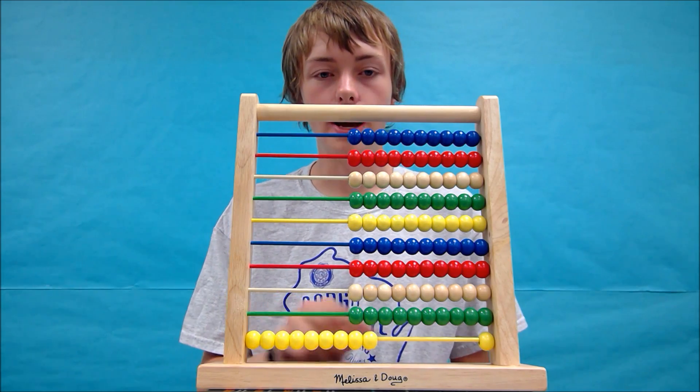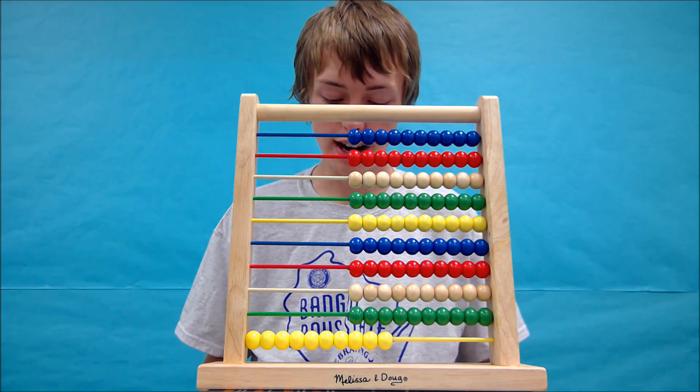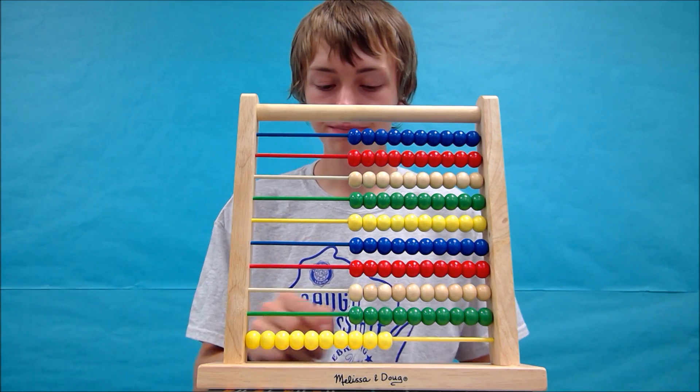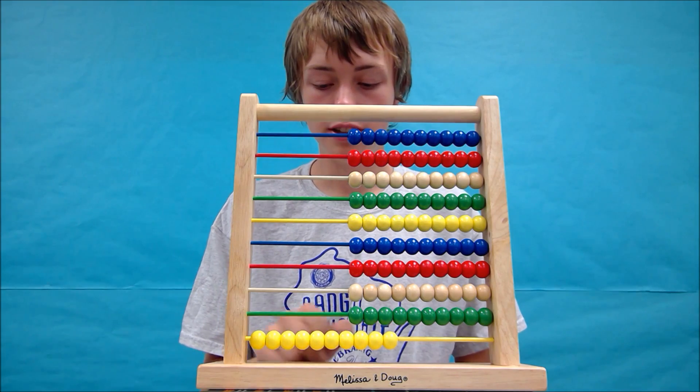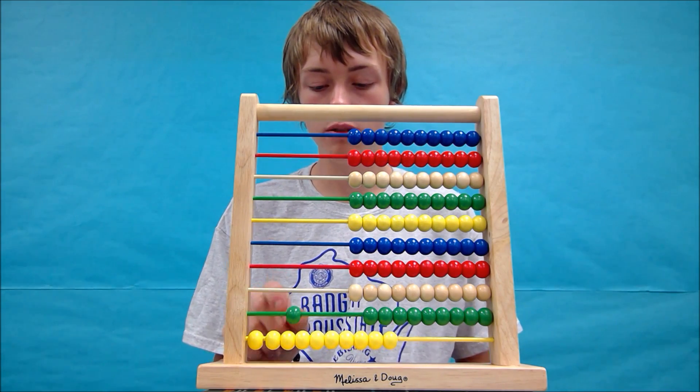So let's start over. We have 9. We moved 1 bead over. To remember that, I will write it down on my sheet of paper because that's the number we will need later when counting. Since we have 10 one beads here, we can move 1 ten bead over because 1 ten bead equals 10 one beads.